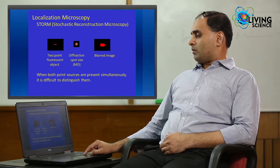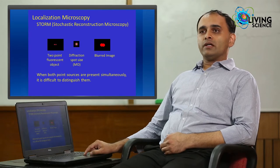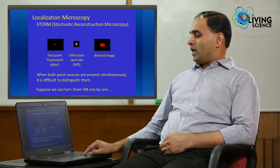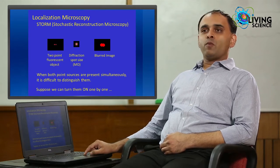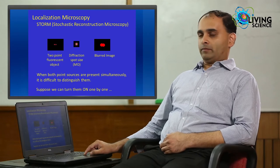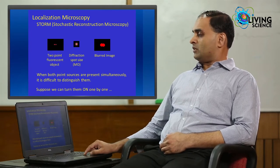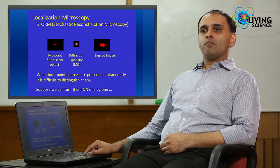So, when both point sources are present, it is difficult to distinguish them. But how about we can turn these two point sources on one by one? Then the situation changes and maybe you can get much higher resolution.